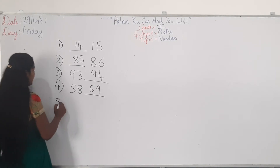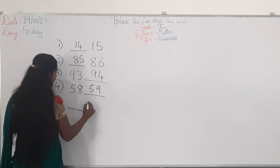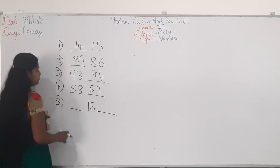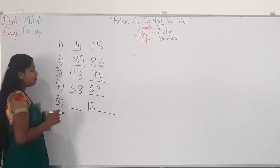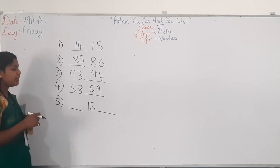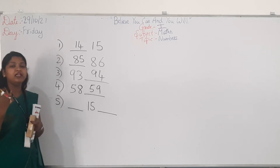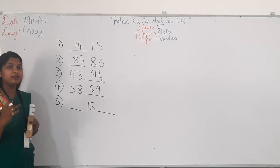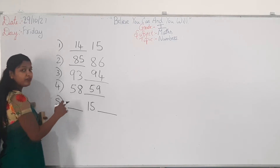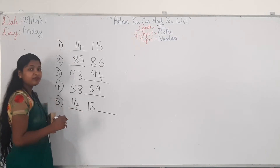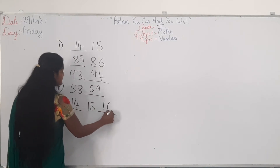Next, we will see in-between numbers. We have to tell which number comes before and after 15. Count from 11: 11, 12, 13, 14, 15, 16. So, which is the number before 15? It is 14. And after 15, it is 16.